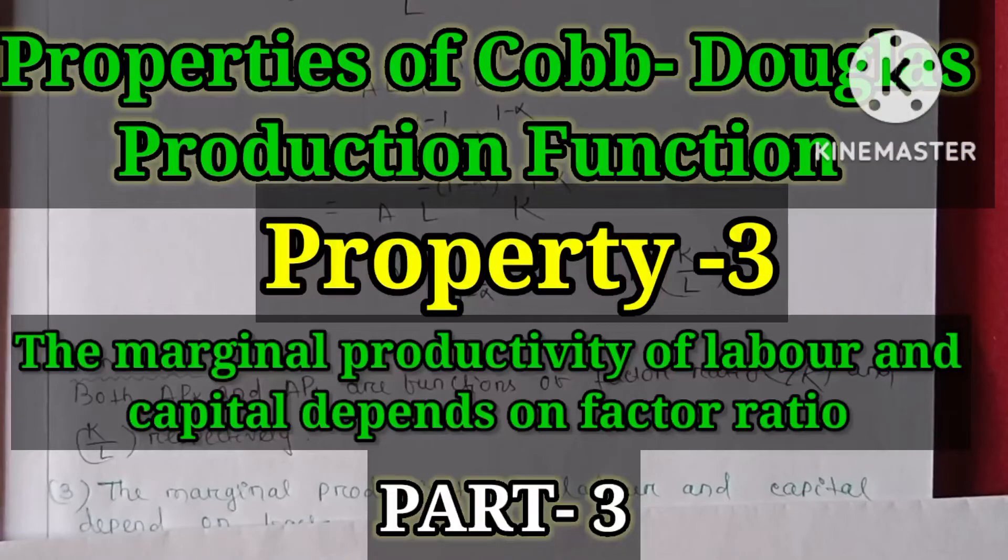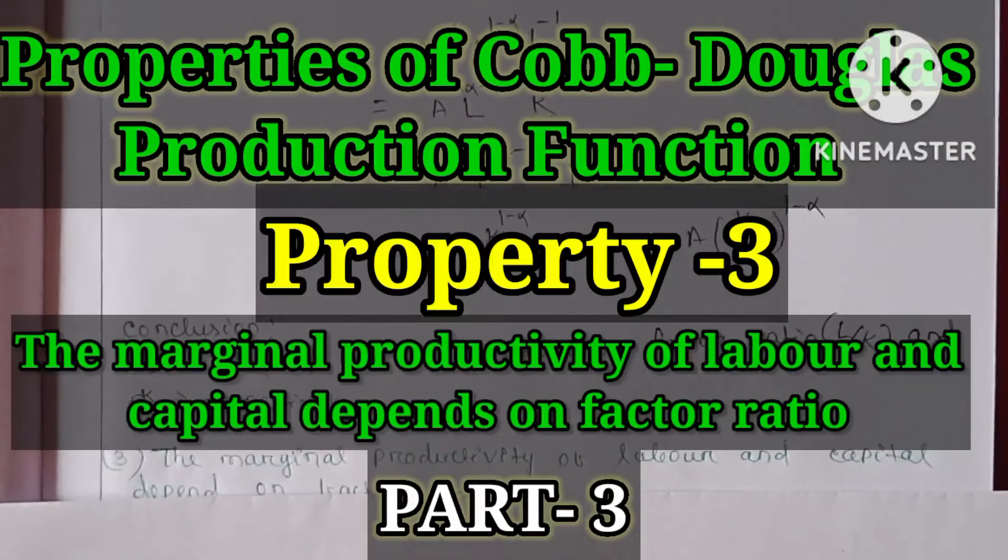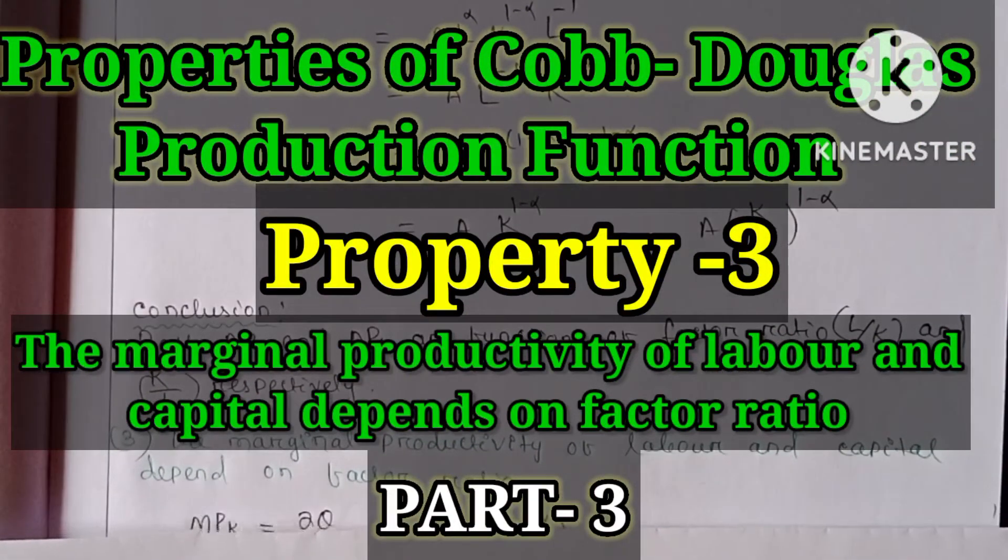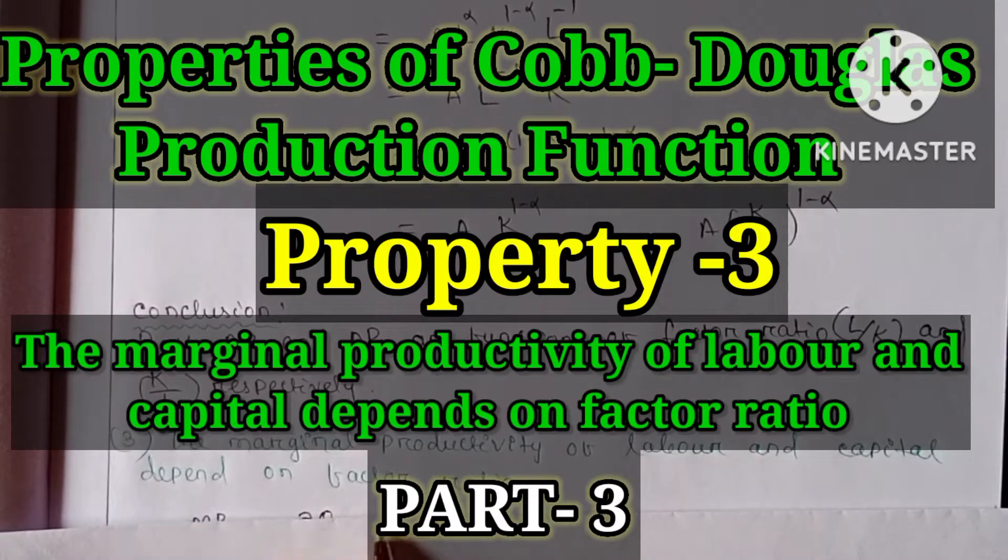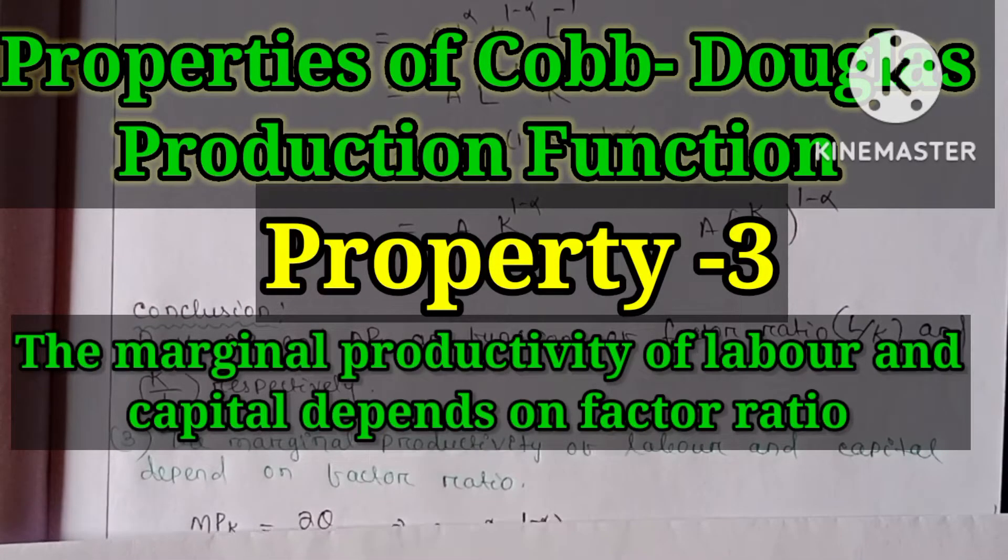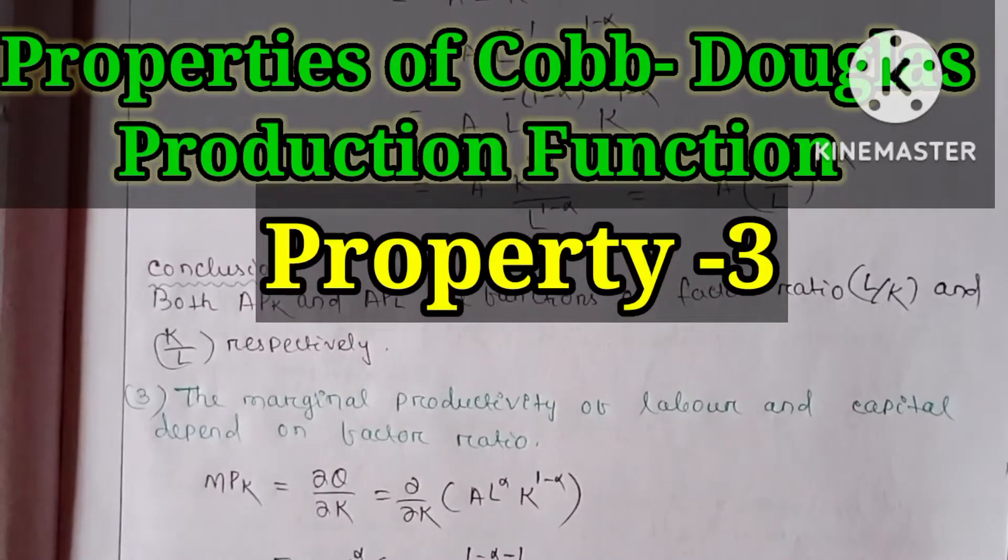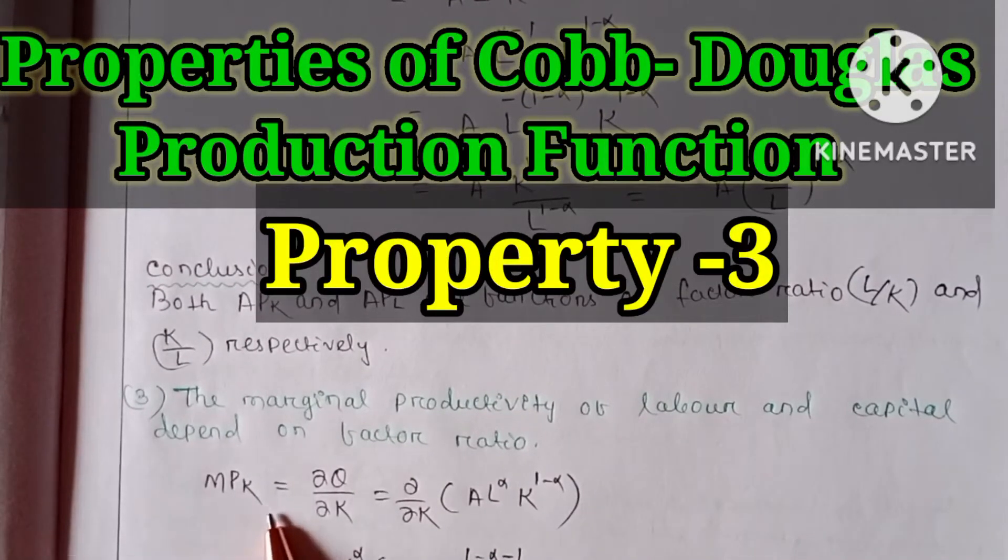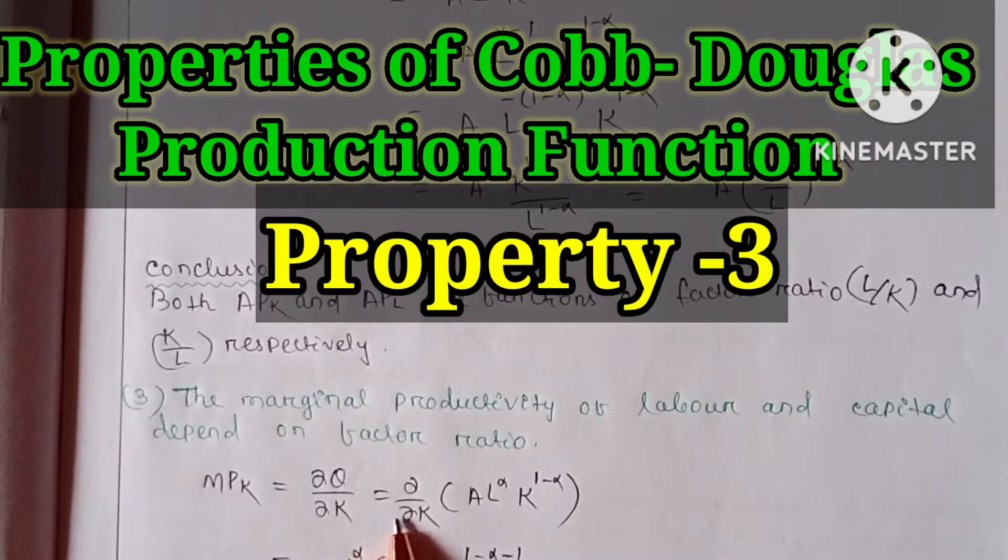Property number three: the marginal productivity of labor and capital depend on factor ratio. As you know, marginal productivity of capital equals δQ/δK.